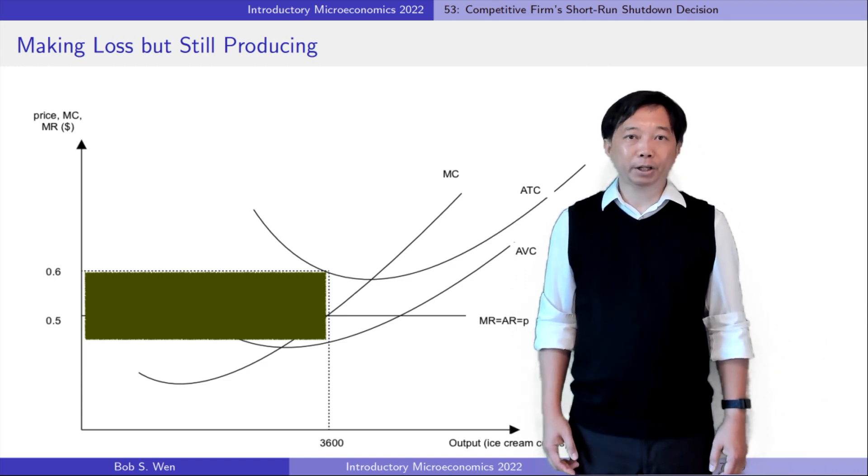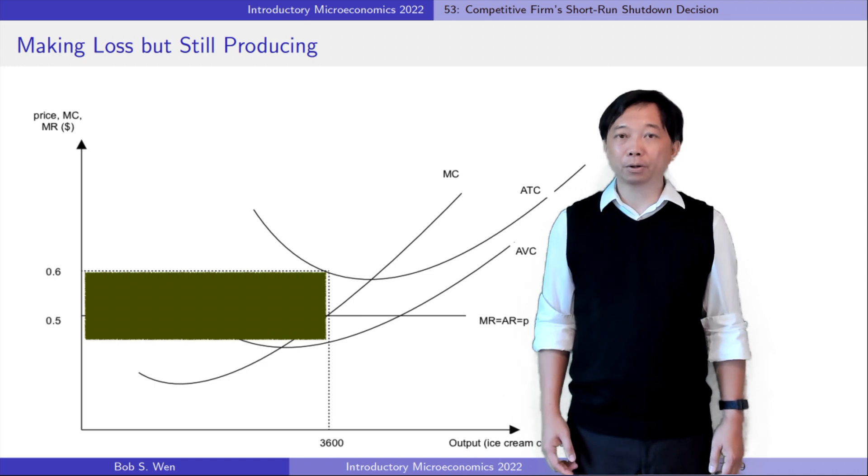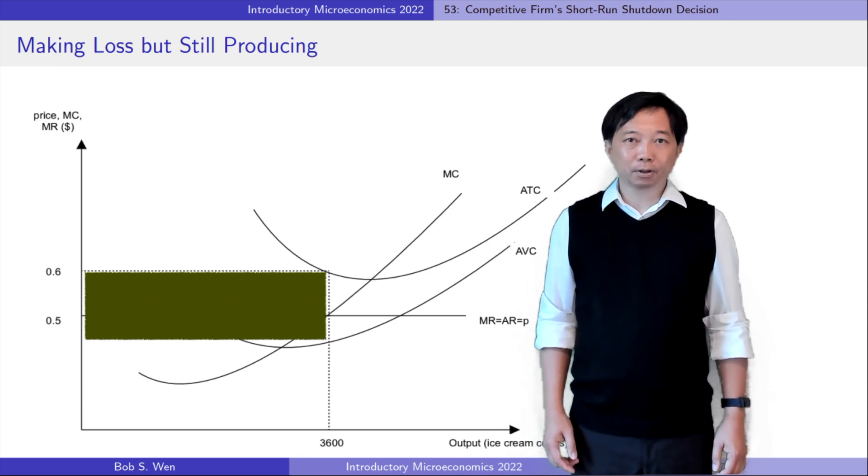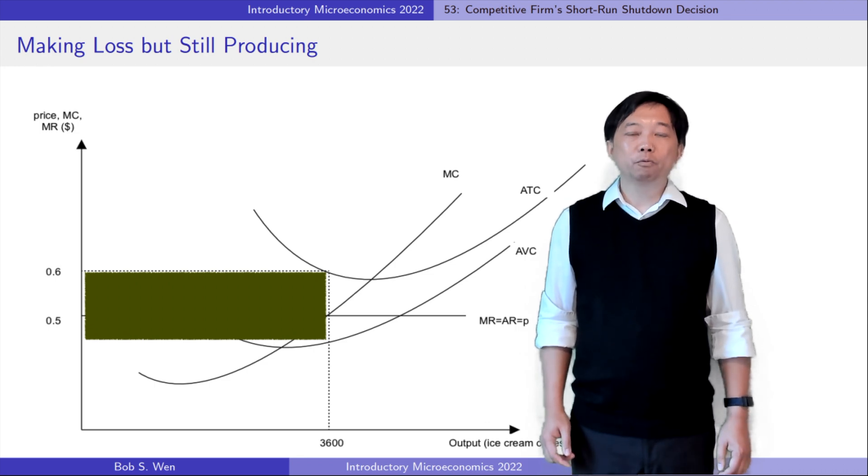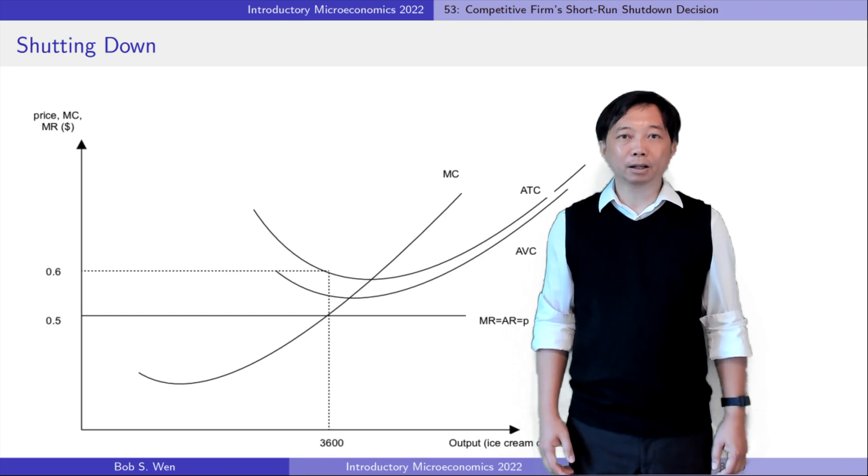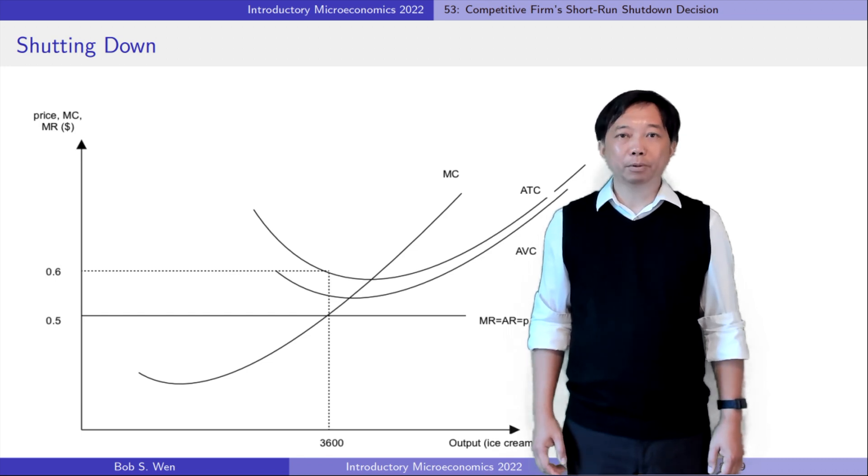The reason is that the firm reduces its loss by operating rather than shutting down because its revenue exceeds its variable cost. Or equivalently, the market price exceeds the firm's average variable cost.